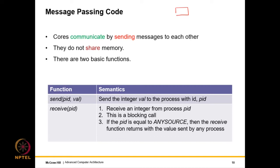In message passing, processors may be connected via Ethernet in a complex network topology. The messages are sent using standard networking TCP/IP protocols. The memory is not shared — all communication is by sending and receiving messages. MPI, the Message Passing Interface, supports two very basic functions.